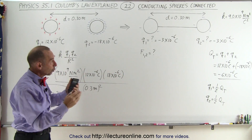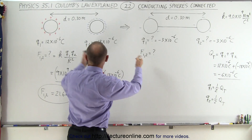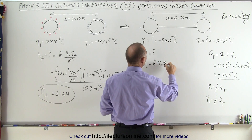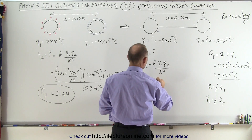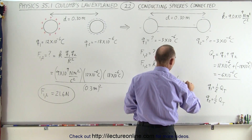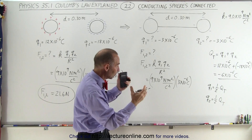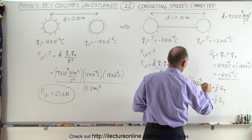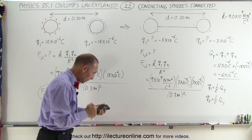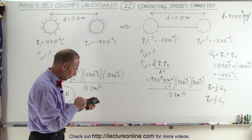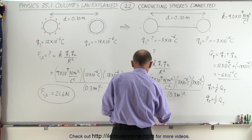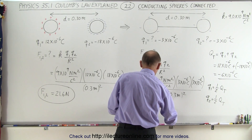Now we're going to calculate the force between those two spheres. There will now be a force of repulsion, where before this was a force of attraction. The magnitude of the force F12 equals k times Q1 times Q2, divided by the distance squared. This equals 9×10⁹ newton meters squared per coulomb squared, times 3×10⁻⁶ coulombs times 3×10⁻⁶ coulombs, all divided by 0.3 meters squared. The result is a small force — F12 equals 0.9 newtons.